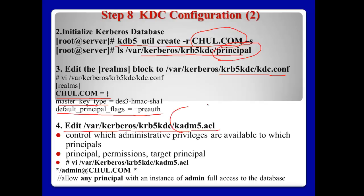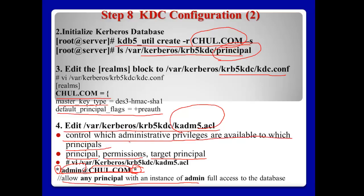Number 4: kadm5.acl — ACL means Access Control List. For example, the entry has star as principal, admin, and charl.com as our realm, and star for permissions. This file consists of three parts: principal, permission, and target principal. Star/admin@charl.com is the principal, and star means permissions and target principal — allowing any principal with the instance of admin to access the database. This file controls which administrative privileges are available to which principal.